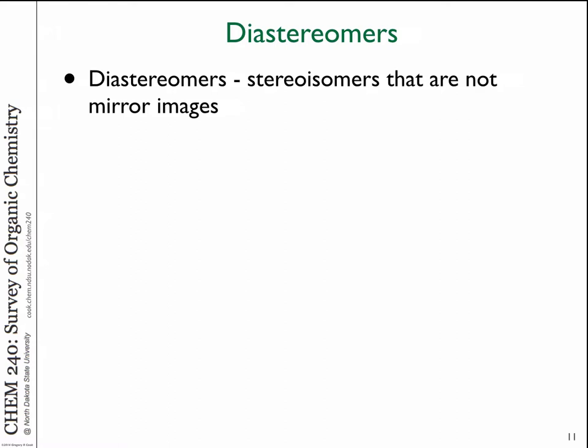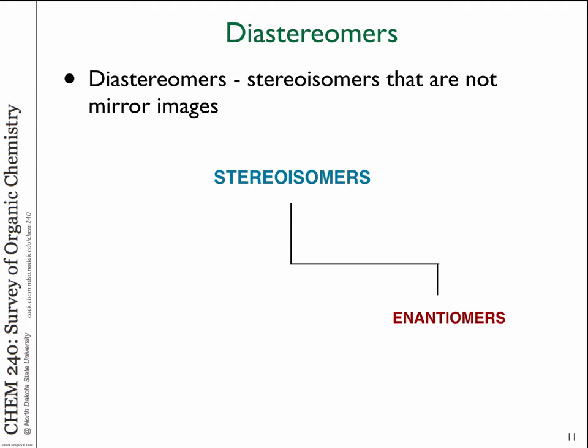Now let's define the other type of stereoisomer. Enantiomers are mirror image stereoisomers. Everything else that is a stereoisomeric relationship between two molecules is called a diastereomer. The easy definition: diastereomers are stereoisomers which are not mirror images of each other.